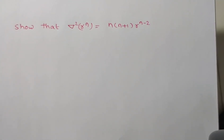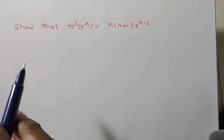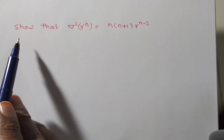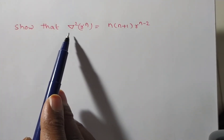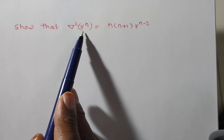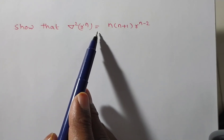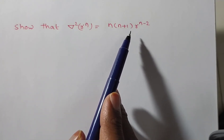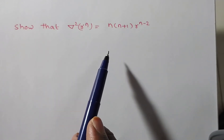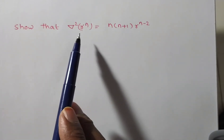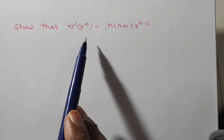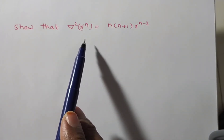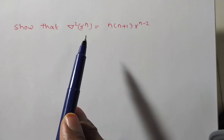We are solving a problem on vector differential calculus. Here we are given: show that del²(rⁿ) = n(n+1)rⁿ⁻². We have to prove this one. Before proving this problem, you have to remember some useful formulas.